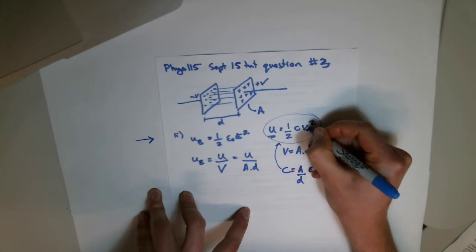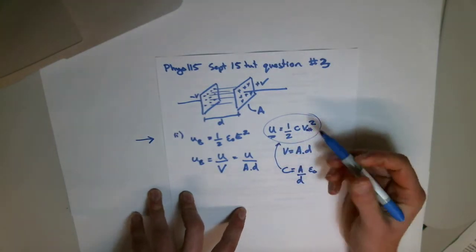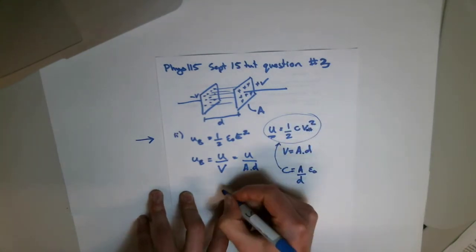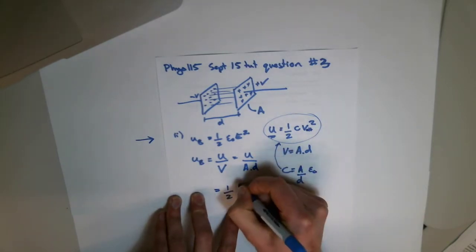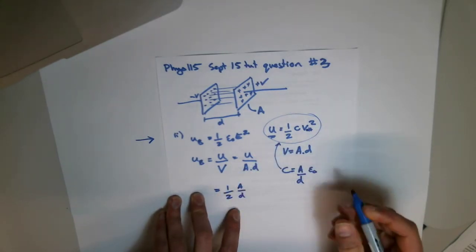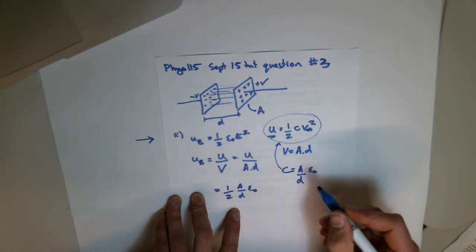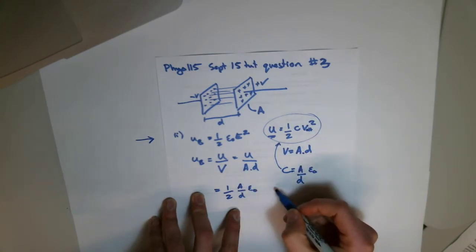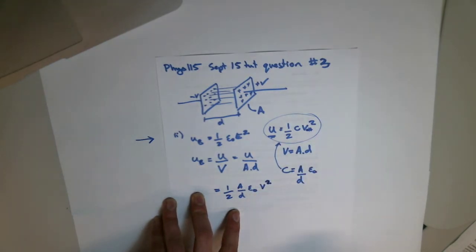but the nice thing about this is that we can substitute this directly in here. So this is voltage, this is volume. Slightly different things. And now we can substitute that in there. So I know I'm going quite fast, but I'll leave you to do the algebra alone. So we're going to do half A on D times E naught, which is the capacitance times V squared. Like that.